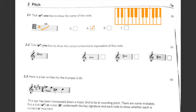This one here, tick one box to show the correct enharmonic equivalent of this note. An enharmonic note is a note that has the same pitch as another note but is written differently on the stave.